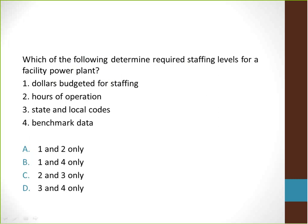Which of the following determine required staffing levels for a facility power plant? One, dollars budgeted for staffing; two, hours of operation; three, state and local codes; four, benchmark data. They are looking for two out of four true answers. Answer C is the correct response — answers two and three are both correct. The hours of operation with state and local codes determine the staffing levels. Answer one is false because dollars budgeted will be driven by the requirements of the code. Answer four is false because benchmarking is useful but unrelated to and independent of any requirements.